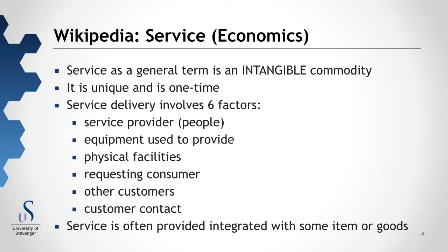The six factors are: the service provider, often the people; the equipment used to provide the service; the physical facilities; the requesting consumer; other customers; and customer contact. To complicate the picture, services are often provided integrated with some items and goods. It's very rare to see service as an only intangible commodity.